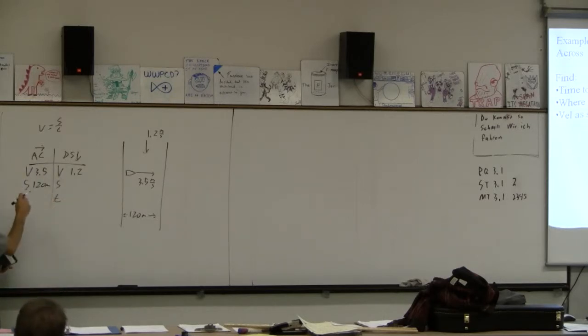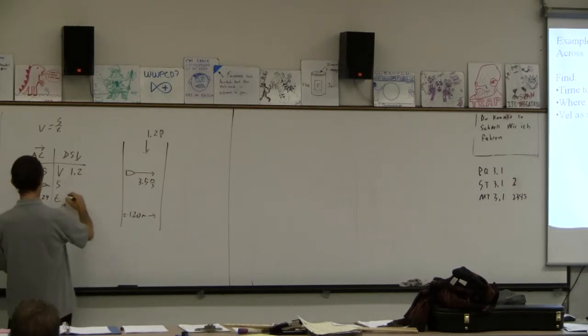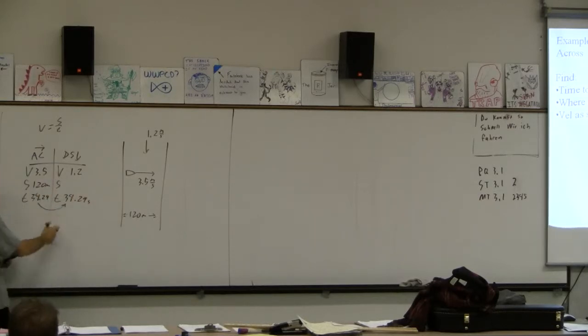So time is going to be displacement divided by velocity, because of math. So 120 divided by 3.5. 34.29 or something like that. Carry a couple extra sig figs. And then we can castle that across. Displacement is going to be velocity times time. So that times 1.2 is 41.14.